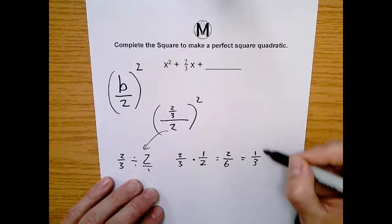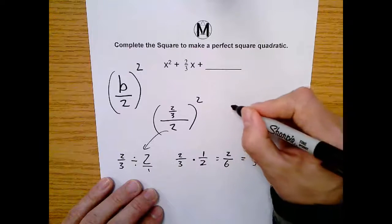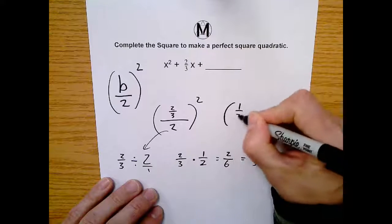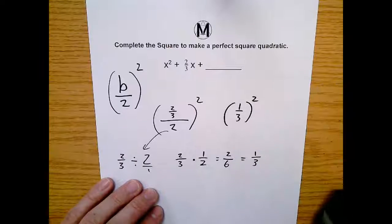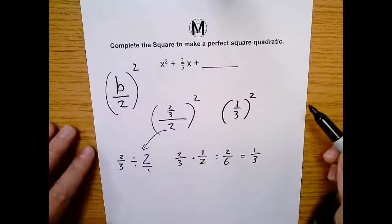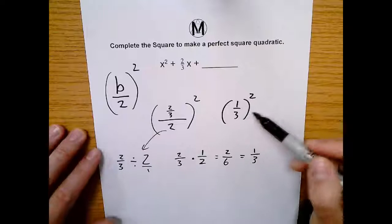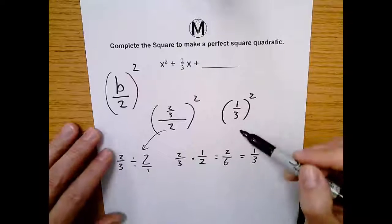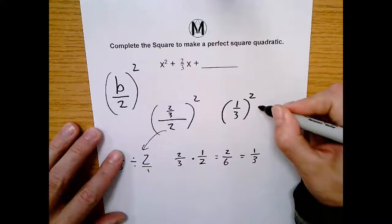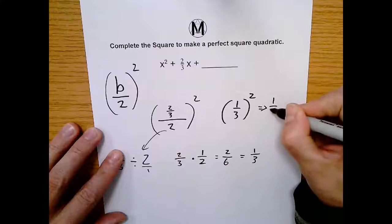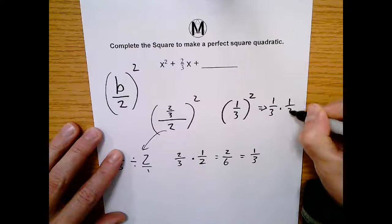So let's bring this whole idea back up here. What we actually have here is 1 over 3 squared. Okay, so to square this, essentially it's just saying 1 over 3 times 1 over 3. So this is the same as 1 over 3 multiplied by 1 over 3.